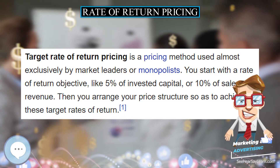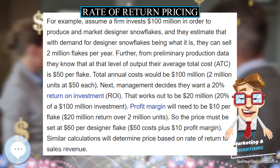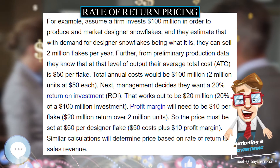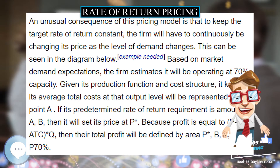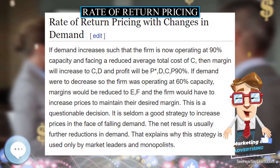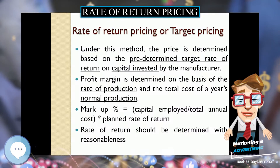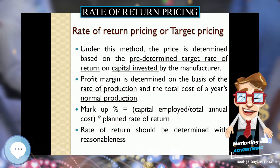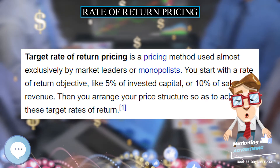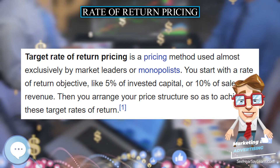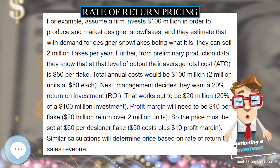Based on market demand expectations, the firm estimates it will be operating at 70 percent capacity. Given its production function and cost structure, it knows its average total costs at that output level will be represented as point A. If its predetermined rate of return requirement is amount AB, then it will set its price at P, because profit equals P minus ATC times Q, and total profit will be defined by area P-B-A-P at 70 percent.